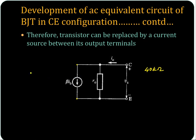IC is equal to beta times IB. So you are replacing the transistor output side with this current source which has a magnitude beta IB.